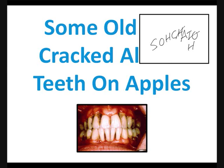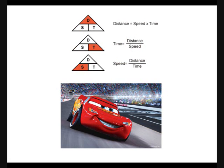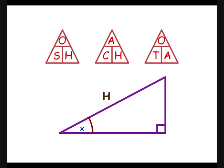A useful way of writing SOHCAHTOA is in triangles, which you may have met for speed, distance and time. They work in the same way — so if you want to work out H in the SOH triangle, you cover it up and divide O by S, where S stands for sine x. H is the hypotenuse, the longest side of the right-angle triangle. O is the opposite, found opposite the labelled angle. A is the adjacent, and it's adjacent to both the labelled angle and the right angle.